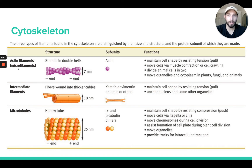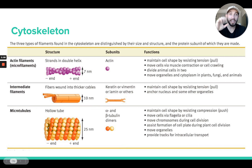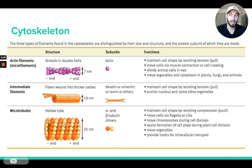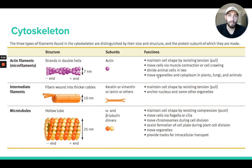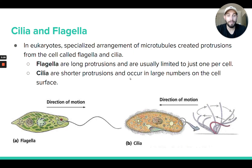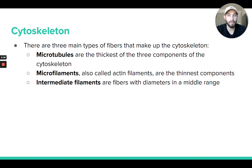The actin filaments, which we call the microfilaments, are very thin protein fibers. Then there's the intermediate filaments, which are bigger — they're thicker than the microfilaments. And then you have the microtubules, which are the thickest protein fibers that make up the cytoskeleton. These are usually the easiest ones to see when we stain and look at a cell underneath a microscope. Just be familiar with those three types of filaments that form the cytoskeleton.